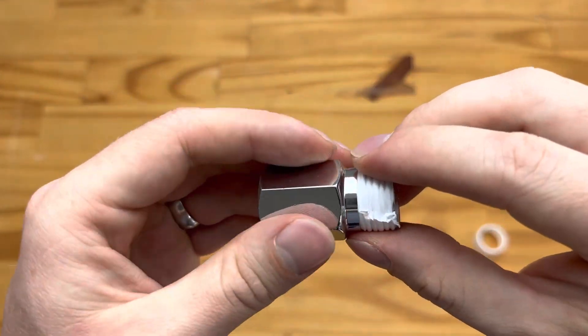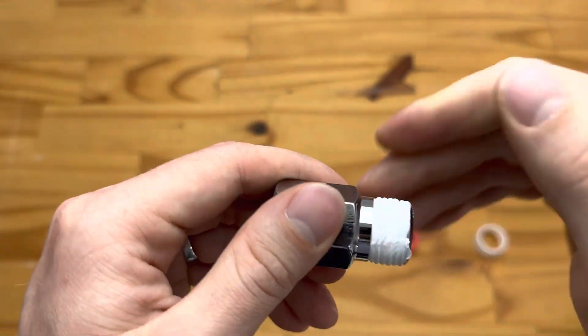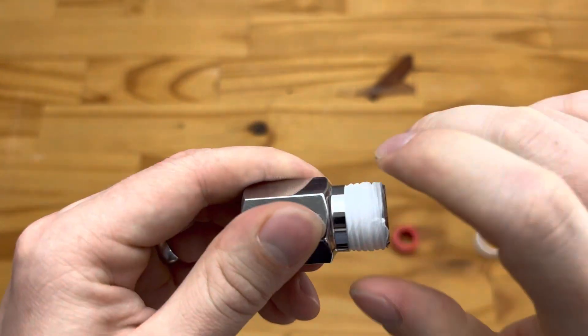So as we tighten this into a fitting, it will turn this way around and ensure that the thread tape remains on the fitting.